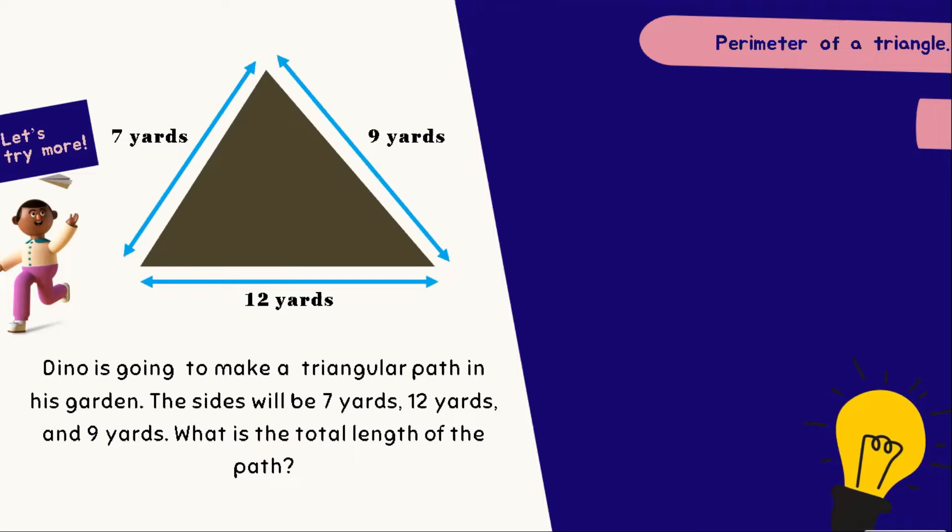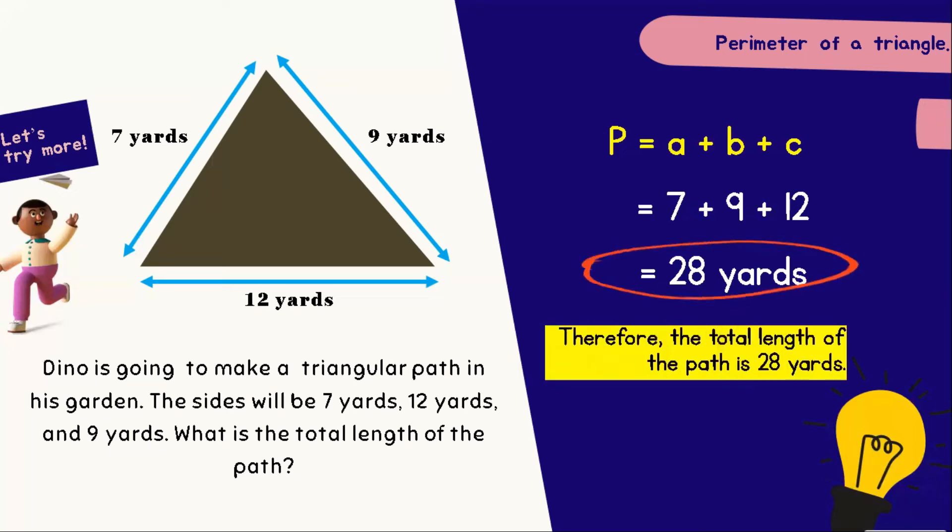And therefore, the perimeter of the triangle that we will be applying in this given situation is A plus B plus C, where every letter stands for each side of the triangle. Let's now substitute by the given data. 7 plus 9 plus 12. In total, we have 28 yards. And therefore, the total length of the path is 28 yards.